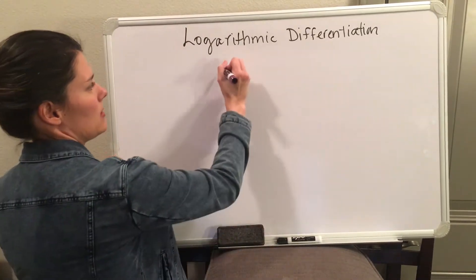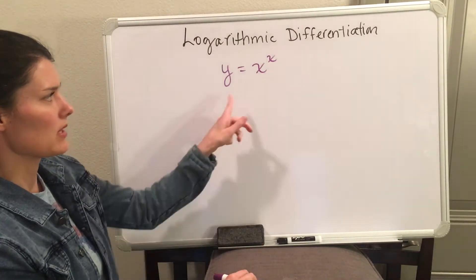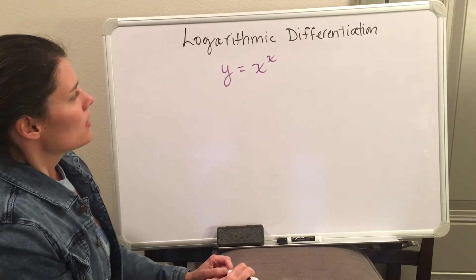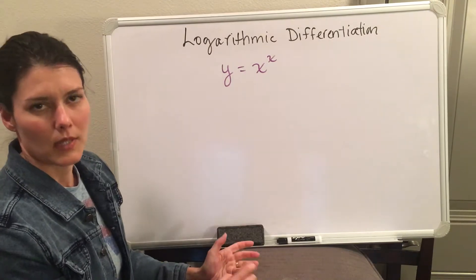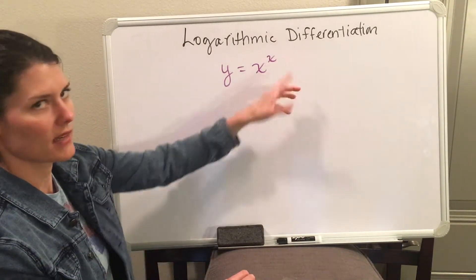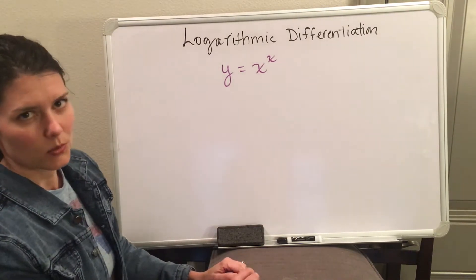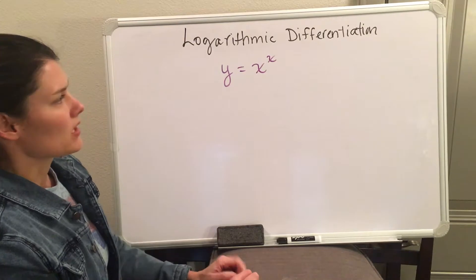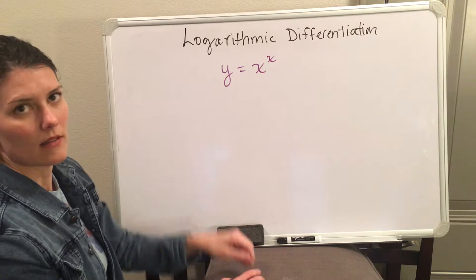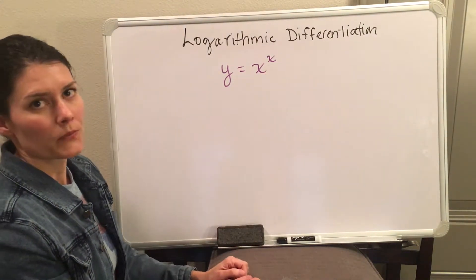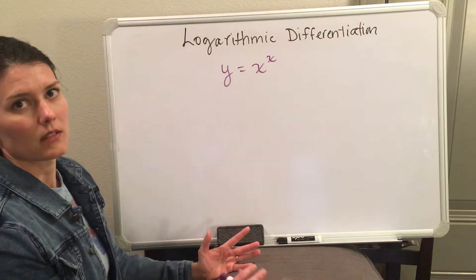Logarithmic differentiation also lets us find the derivative of something like x to the x. The power rule does not apply because the power has to be a constant, and here it is a variable. The exponential rule will not work either because the base has to be a constant. You have a variable raised to a variable, so the only way to take the derivative is to use logarithmic differentiation.